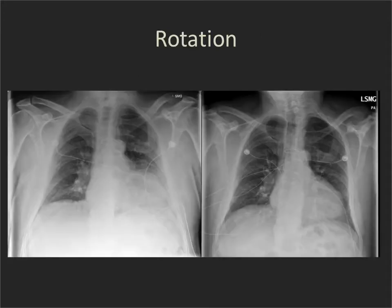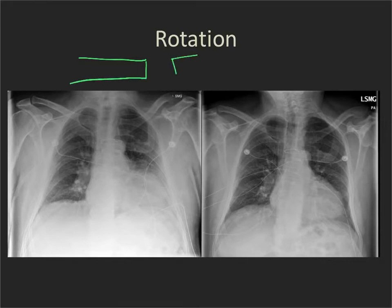So let's start with looking for rotation. The way we assess rotation in an adult is by looking at the anterior ends of the clavicles and their relationship to the thoracic vertebral spinous process in between. We want that distance to be equal on either side.